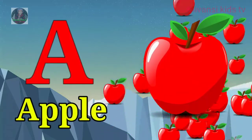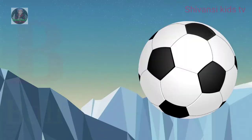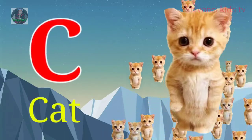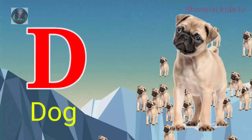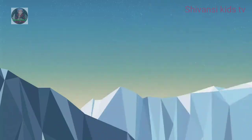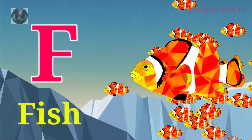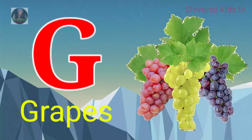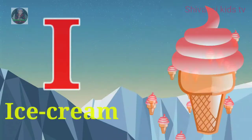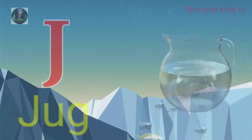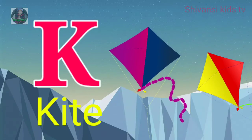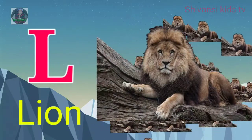A for apple, B for ball, C for cat, D for dog, E for elephant, F for fish, G for grapes, H for hand, I for ice cream, J for jug, K for kite, L for lion.